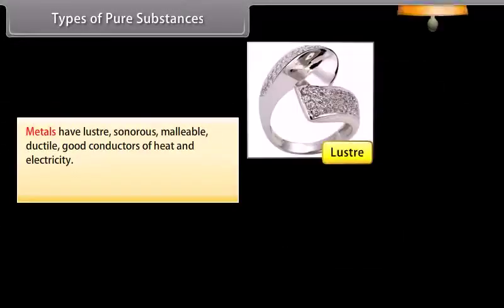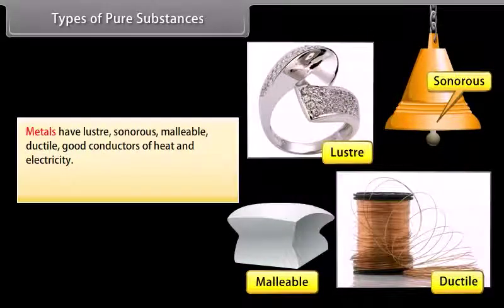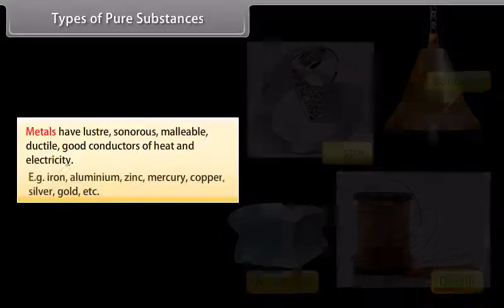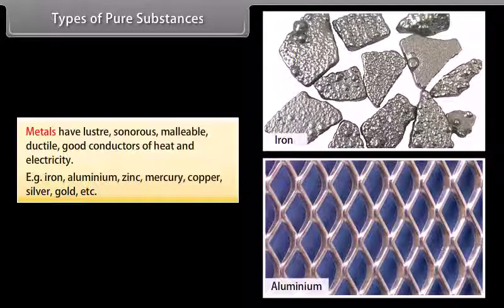Metals have luster, sonorous, malleable, ductile, and are good conductors of heat and electricity. Examples: iron, aluminum, zinc, mercury, copper, silver, gold, etc.